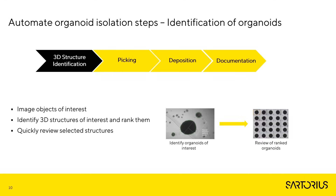Let's take a closer look at the process of identification and isolation of organoids using cell selector. We start by first identification of 3D structures, where we can leverage multiple imaging modalities such as fluorescence and bright field imaging. The heterogeneity of organoids can complicate result interpretation after drug treatment, as organoids can significantly vary in their size, shape, and overall 3D structure.